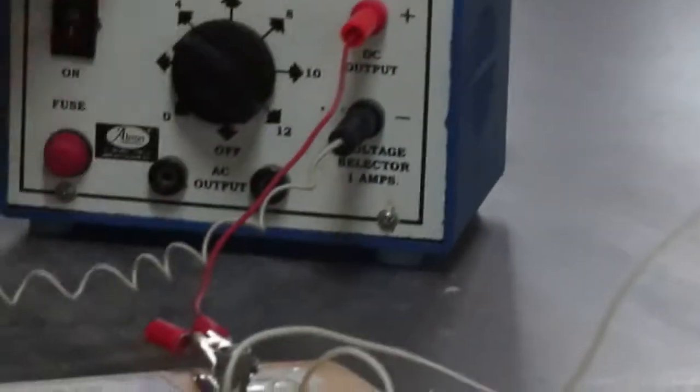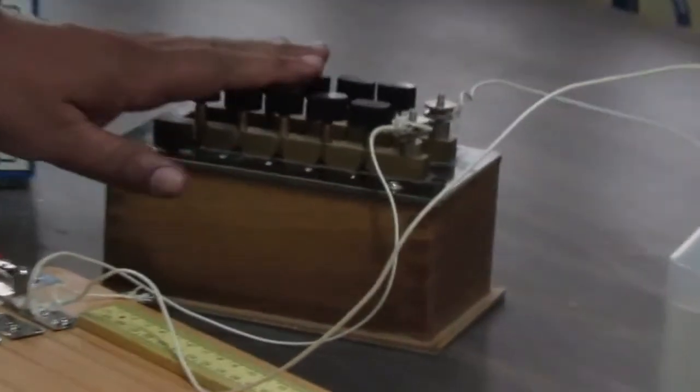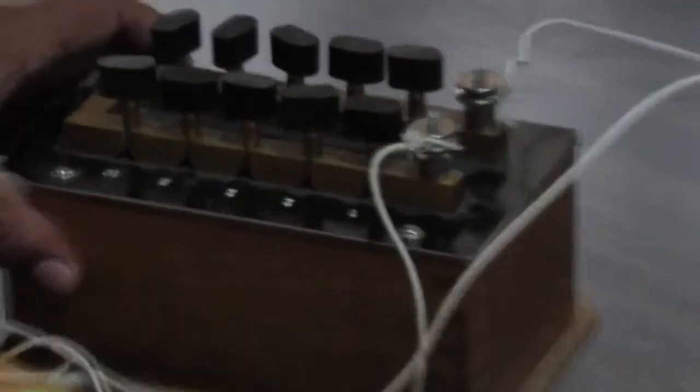Here we will start. First, this is the battery eliminator. This is the resistance box - the low resistance box because the minimum value is 1 and maximum value is 20 ohms.